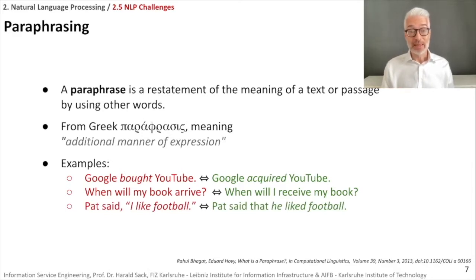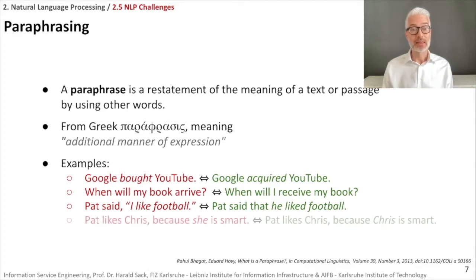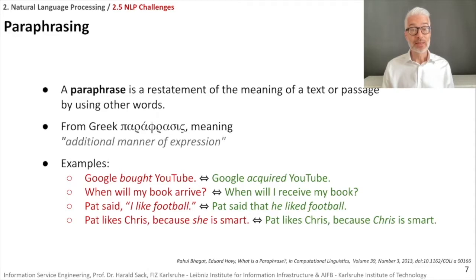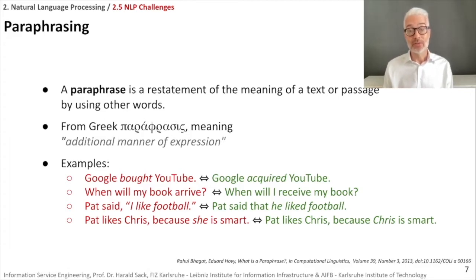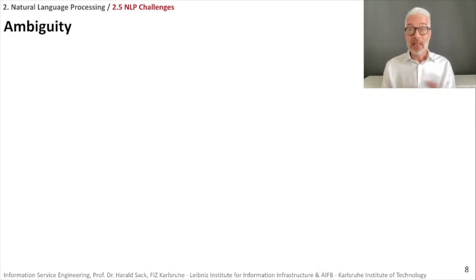'Pat said I like football' or 'Pat said that he liked football' — direct speech versus indirect speech, two ways to express the same thing. 'Pat likes Chris because she's smart' or 'Pat likes Chris because Chris is smart' — one uses a pronoun, the other uses the name. So we have many, many ways to express exactly the same subject.